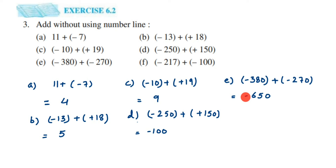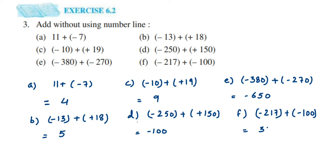The last question, problem (f), is minus 217 plus minus 100. Again, both integers are of the same sign — both negative — so we add them: 217 plus 100 is 317. Since both integers are negative, we put the minus sign, giving minus 317. These were simple questions — we just applied two rules. If you have any further questions or doubts, drop a comment below. Thank you so much for watching.